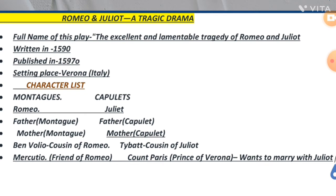The other day when Romeo was gone, Juliet's mother and father arranged for her to marry Count Paris, who was Verona's prince's relative. She was very upset and aware of it — she was already secretly married to Romeo.